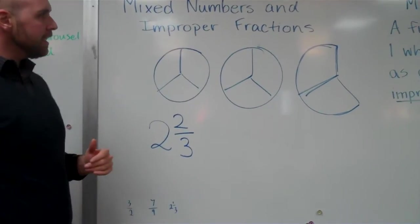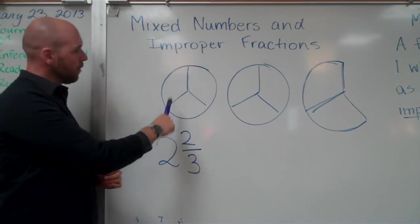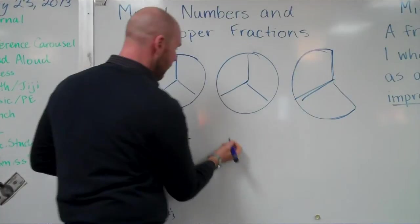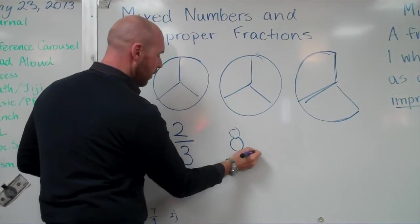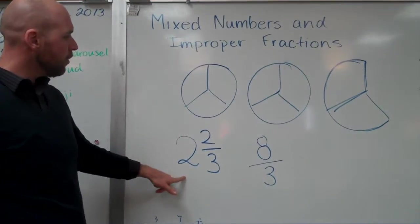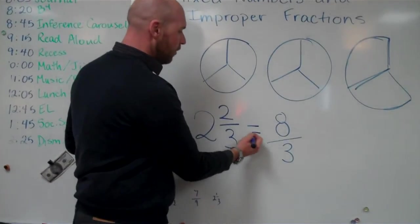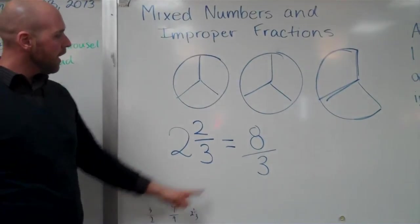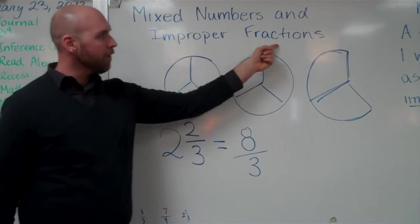An improper fraction is easy. I just count my thirds. One, two, three, four, five, six, seven, eight. Eight thirds. So two and two thirds equals eight thirds. Two and two thirds is my mixed number. Eight thirds is my improper fraction.